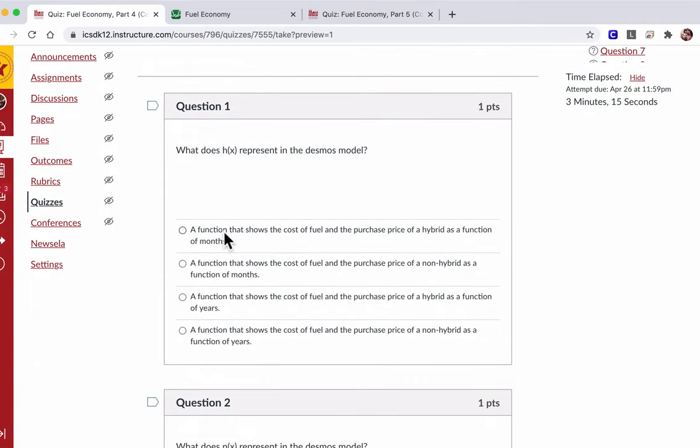Now there are four choices. Which one is it? A function that shows the cost of fuel and the purchase price of a hybrid as a function of months. That's the answer, right? Because in this case, this shows the cost of fuel and the purchase price of a non-hybrid. No, it's for the hybrid. And in the other cases, it says hybrid, non-hybrid, but it's based on years. And clearly, this is based on months.